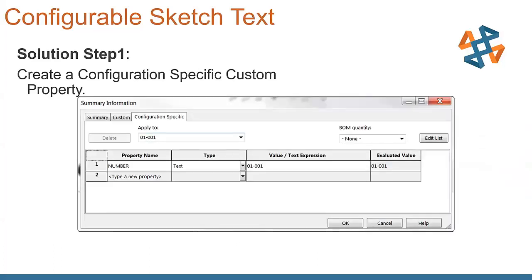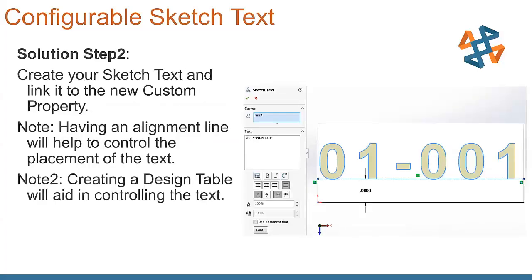The first thing that we do is we create a configuration specific custom property. A lot of people forget that this one is out here when you go to create custom properties. Everybody by default jumps that middle tab custom that you just saw a few minutes ago in that last solution we were working on. We want to go all the way to the end and we go to configuration specific. We create our property in there. This one is just called number and we put its value in there.